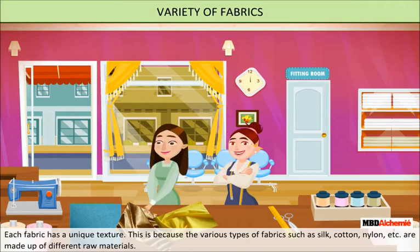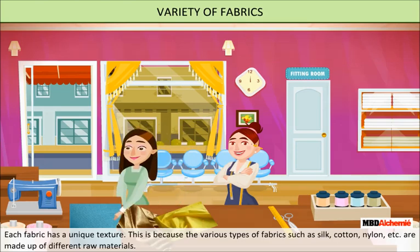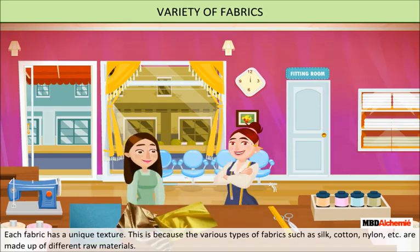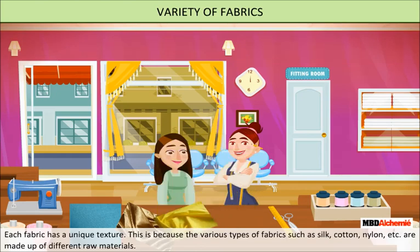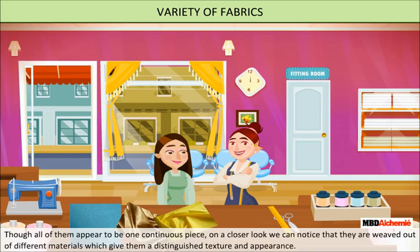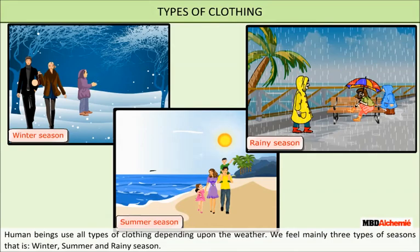Each fabric has a unique texture because the various types of fabrics — such as silk, cotton, nylon, etc. — are made up of different raw materials. Though all of them appear to be one continuous piece, on a closer look we can notice that they are woven out of different materials which give them a distinguished texture and appearance.